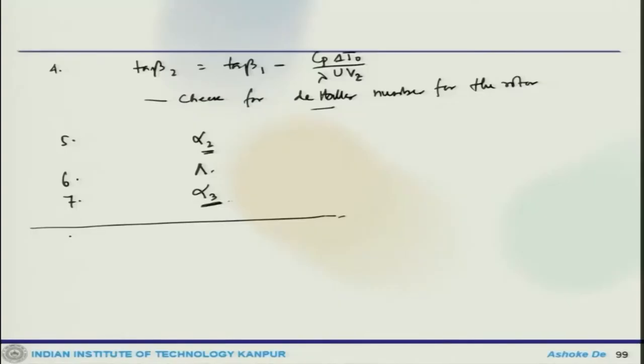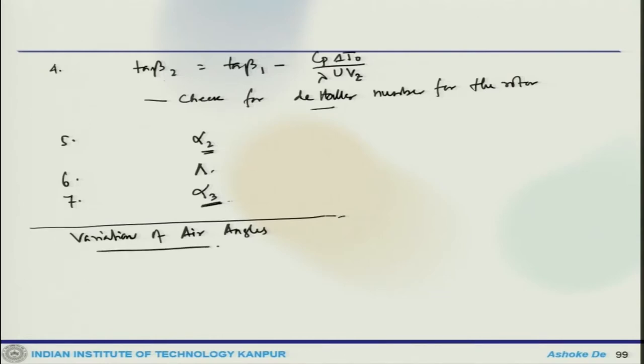Let us continue the discussion on the design of axial flow compressors, looking at individual components and their calculations — how to obtain different individual parameters like flow angles. We now look at the next set of calculations, such as variation of air angles from root to tip, based on the blading that we have decided.